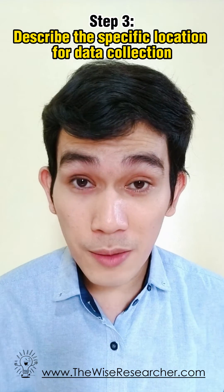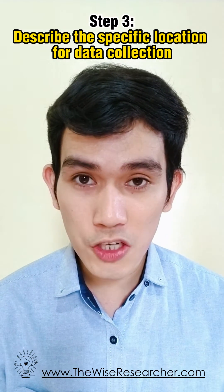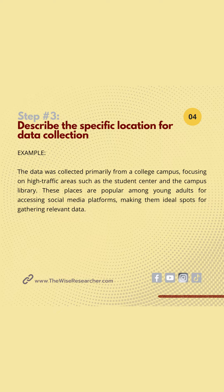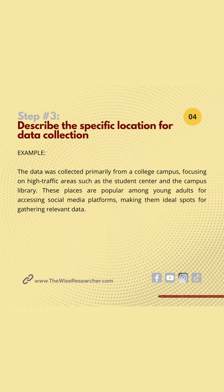Step number three: describe the specific location of the data collection. Example: the data was collected primarily from a college campus, focusing on high-traffic areas such as the student center and the campus library. These places are popular among young adults for accessing social media platforms, making them ideal spots for gathering relevant data.